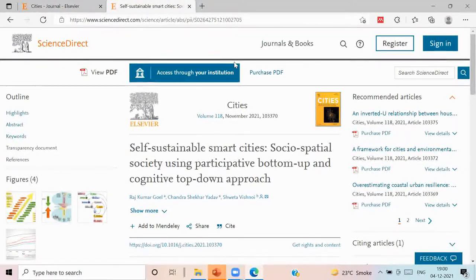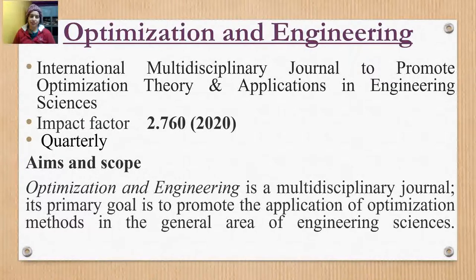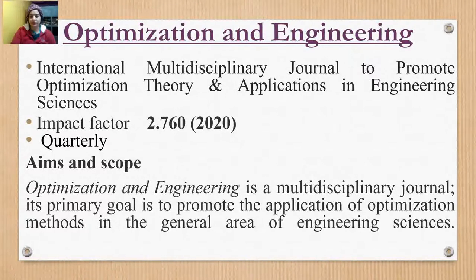Keep watching until the full end of the video and give feedback in the comments section. The second journal is Optimization and Engineering. It is an international multidisciplinary journal to promote optimization theory and application in engineering science. Its impact factor is 2.760 in 2020, and it is published quarterly.